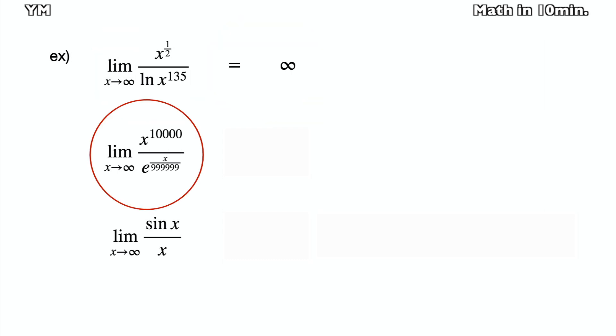In case of the second problem, x^10000 is below e^(x/99999). So the answer is 0.